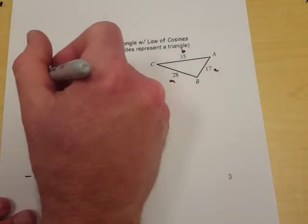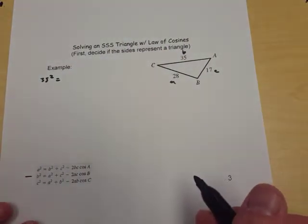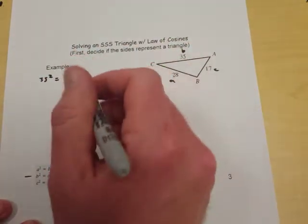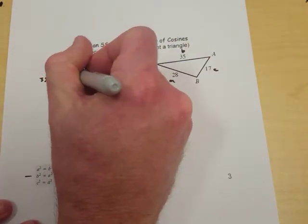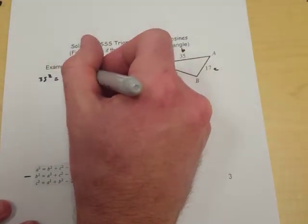So I'm going to start with B squared minus 35 squared equals A squared, which is 28 squared, plus C squared, which is 17 squared,